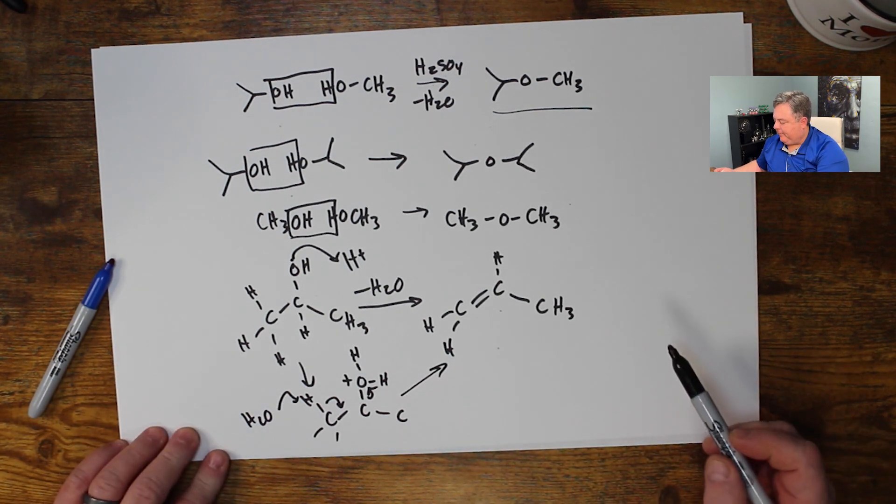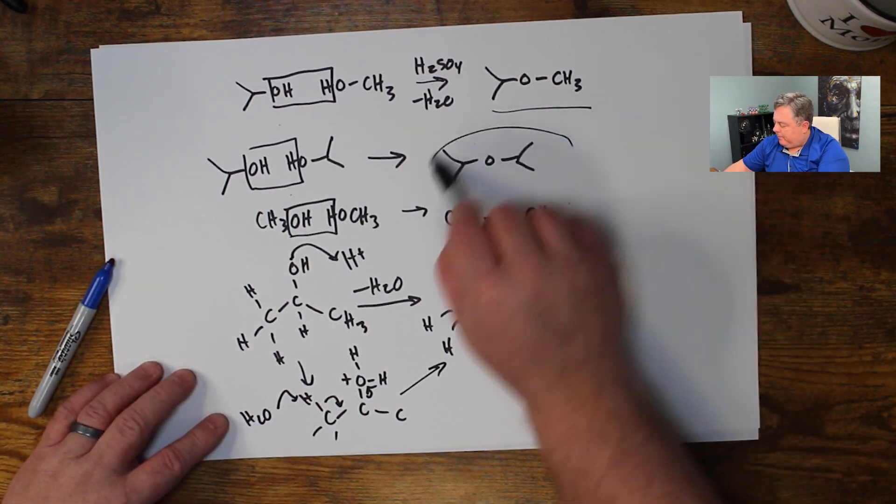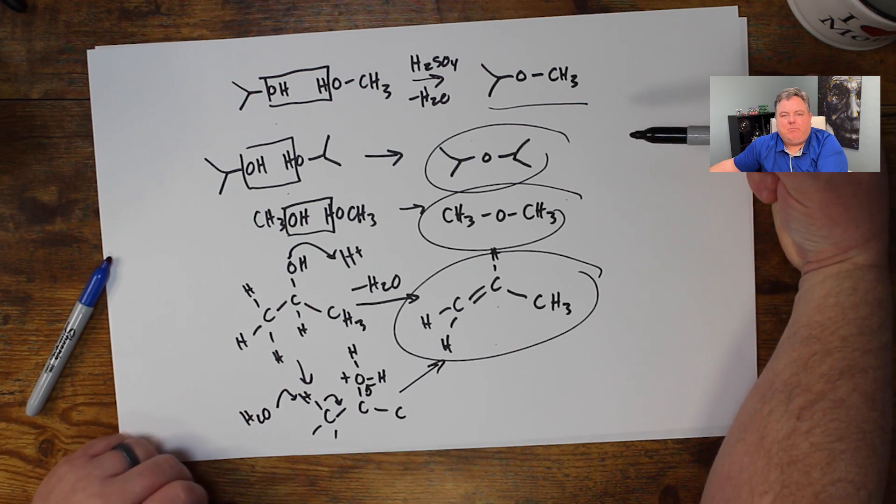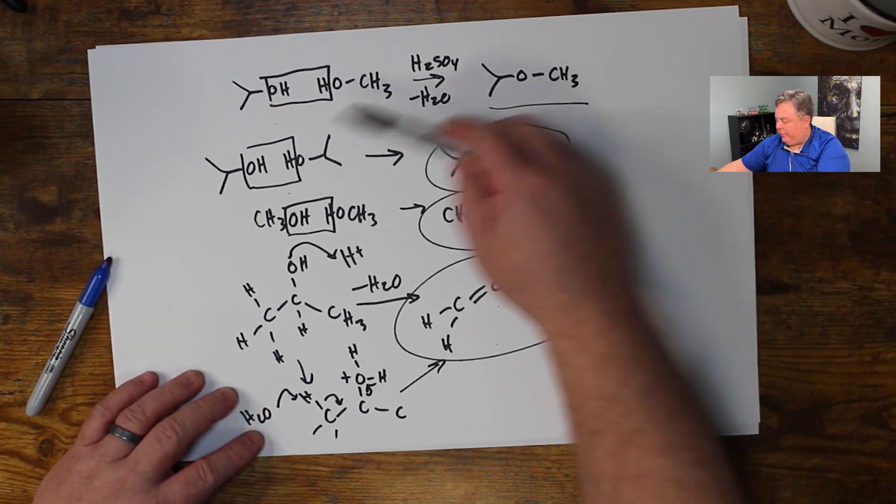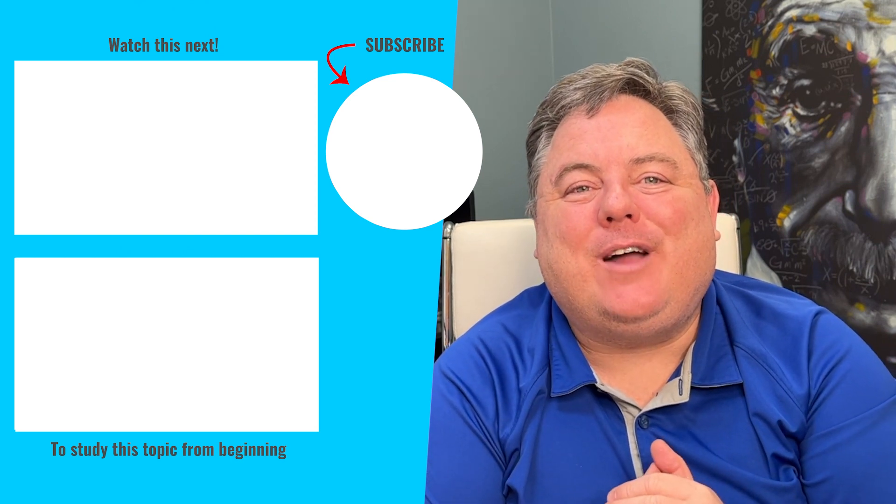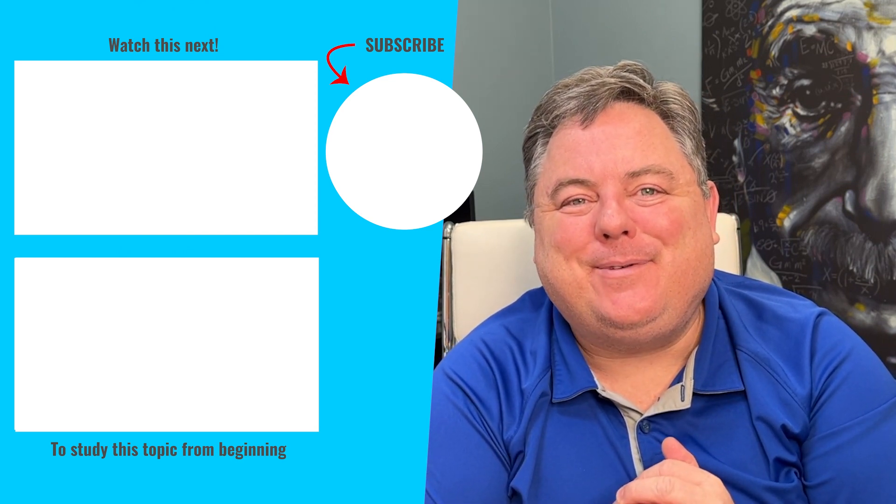Well what if two of those got together and lost water? Well that would make this compound which I'd have to separate away from what I was trying to make. Or what if two alcohols like methanol got together? Then I'd make dimethyl ether and I'd have to separate that from what I was trying to make.